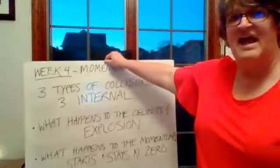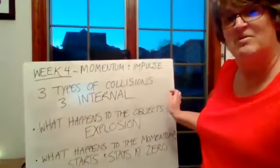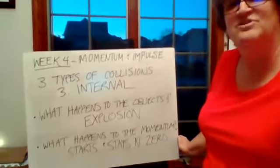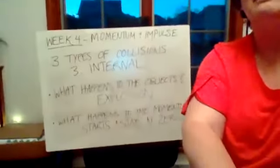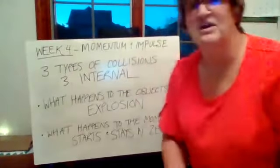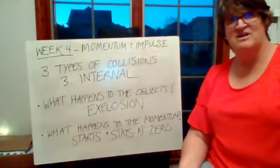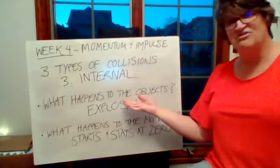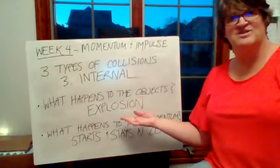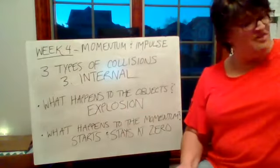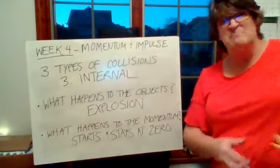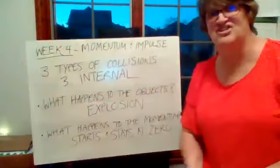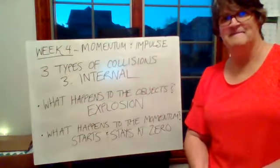Our third kind of collision is called an internal collision. Now remember, we're going to discuss the same two types of things for an internal collision. So what is it about an internal collision that makes it be internal? Well, an internal collision, what happens is that there's an explosion. Another way to say that is that pieces go flying in all directions.